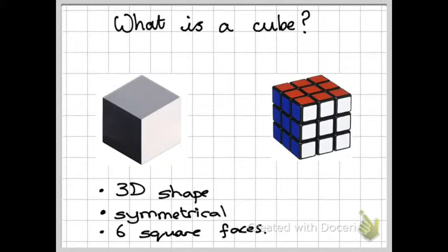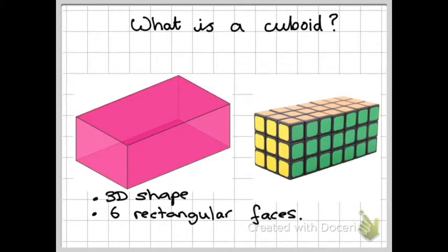So what is a cube? Well, a cube is a 3D shape, it's symmetrical, and it has six square faces. And look, a Rubik's cube—that's probably the most famous type of cube you'll know.